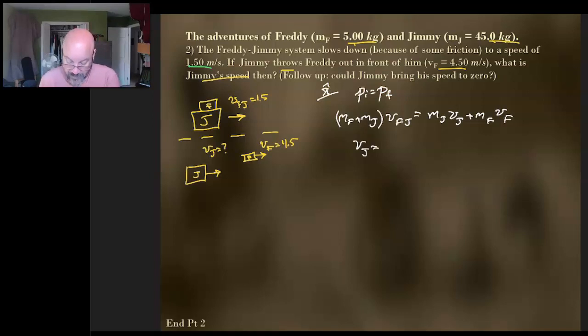But what we're going to end up with is we're going to end up with the velocity of Jimmy being equal to... oh I got it right, I got it written down over here. v_FJ, okay, and this is going to be mass of Freddy plus the mass of Jimmy over the mass of Jimmy. Checking my notes on this. And then minus the velocity of Freddy, and then we're going to have the mass of Freddy divided by the mass of Jimmy like this.